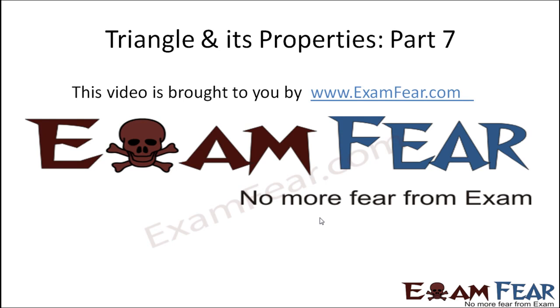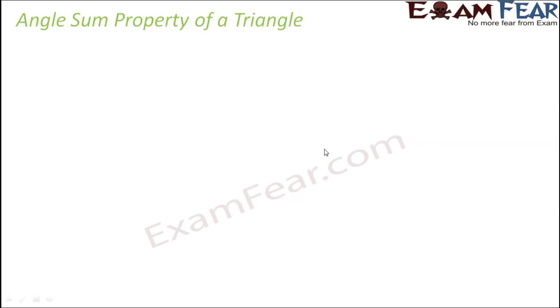Hello friends, this video on triangle and its properties part 7 is brought to you by examfear.com. Now we are going to talk about something very important and interesting as well—the angle sum property of a triangle. This is a very basic property of any triangle, and this property says that the sum of the three angles of a triangle is equal to 180 degrees.